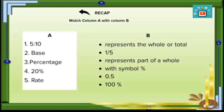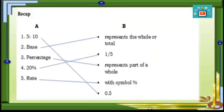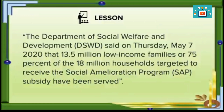Time is up. Here are the answers: 5 to 10 is five-tenths. Base represents the whole or the total. The percentage represents a part of a whole. Number four: 20% is the same as one-fifth. Number five: the rate is denoted with the percent symbol.